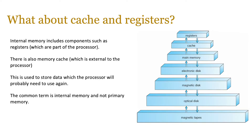Now let's look at cache and registers. The pyramid on screen shows memory from fastest to slowest. Internal memory includes components such as registers, which are often part of the processor — think about the von Neumann diagram. Registers are built into the hardware: accumulators, memory address registers, memory data registers, interrupt registers, index registers — all part of the CPU itself. These are super fast because they operate at similar speeds to the CPU. Then there is memory cache, which is external to the processor — a data store between the RAM and the CPU. You will have different levels of cache as well.